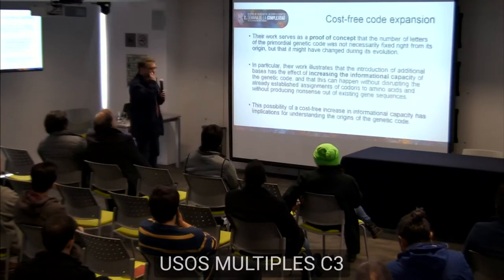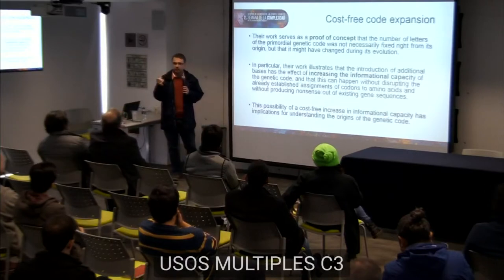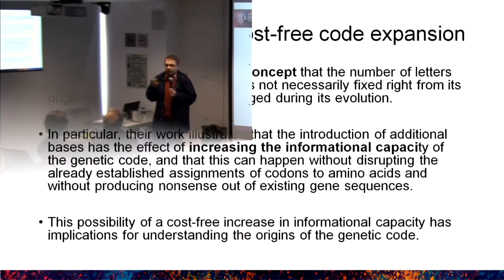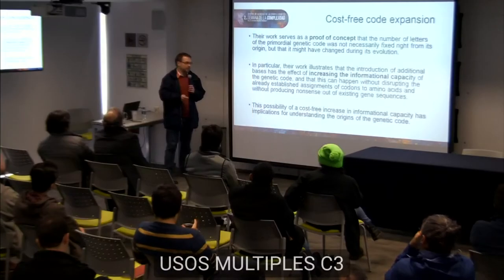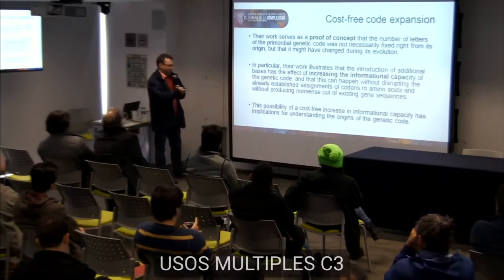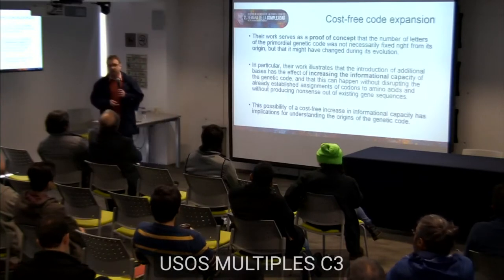This gives us a proof of concept that we can change the number of letters in the genetic code. Apparently, nobody has previously thought about the possibility that during the evolution of the genetic code there could have been changes in the number of letters used. We have now found a way to increase the informational capacity of the genetic code without any costly changes, and this has implications for understanding the origins of the genetic code.